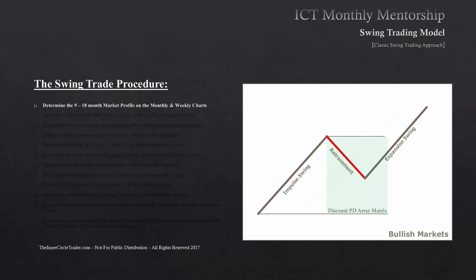The swing trade procedure: on the monthly and weekly, look for the 9- to 18-month market profile. Are we in a trending environment or a range-bound consolidation? Look for a market that leaves a consolidation aggressively, moving out of a small trading range and moving aggressively higher — that shows displacement on a monthly or weekly chart. We then determine the monthly PD arrays and refer to the active discount arrays: bullish order blocks, liquidity voids below, fair value gaps underneath, old lows, bullish breakers, and bullish mitigation blocks.